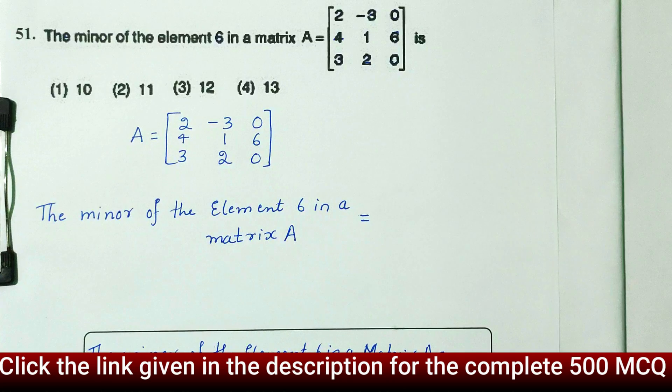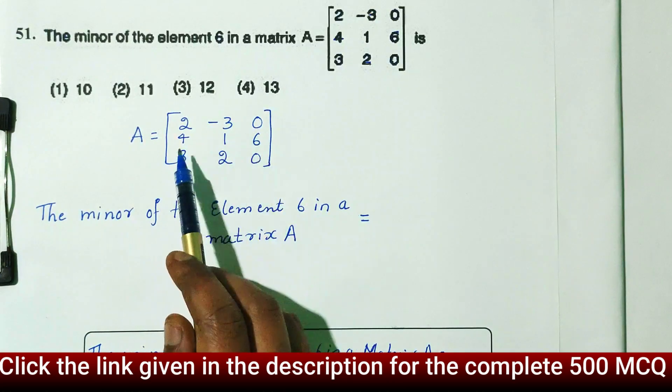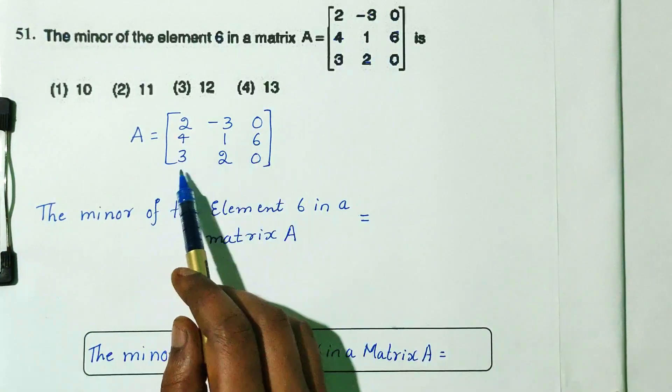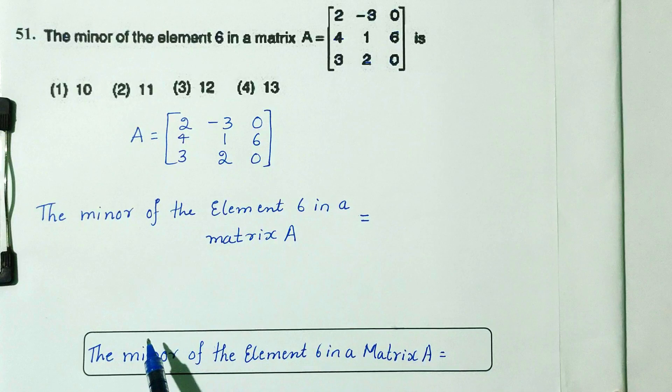So first, A is equal to the matrix: 2, minus 3, 0, 4, 1, 6, 3, 2, 1 — and 3, 2, 0.